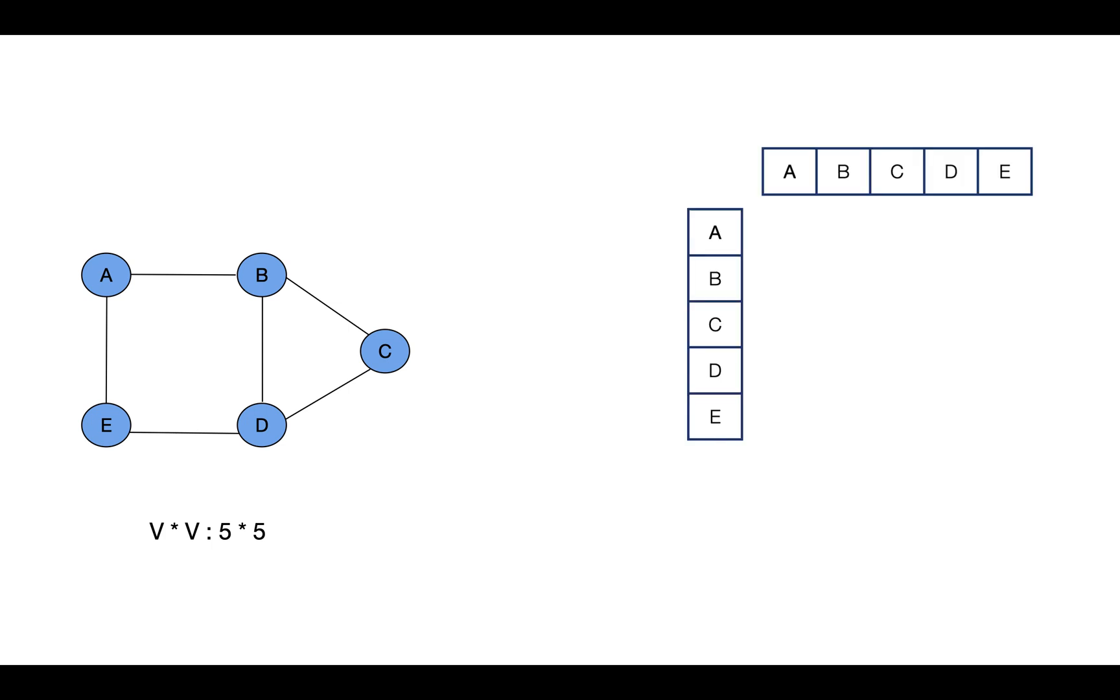Graphs can be represented using adjacency matrices and adjacency lists. We can choose one of these ways according to the need to represent the graph. See this graph. If I have to represent this graph as an adjacency matrix or as a 2D array, then the size of that 2D array or the matrix will be 5 cross 5 as there are 5 vertices in this graph.